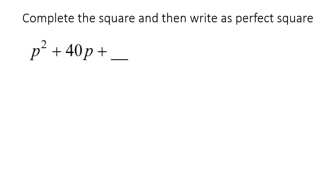In this lesson, we're going to be going over the basics of completing the square. So all I want you to really do is the following. You know when you've seen ax squared plus bx plus c — I want you to always make sure that the a is a 1. So a must always be a 1 when completing the square.